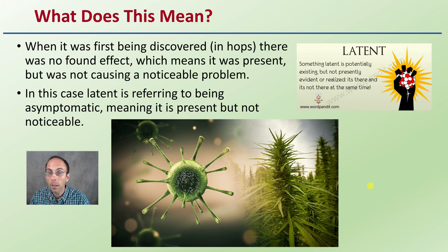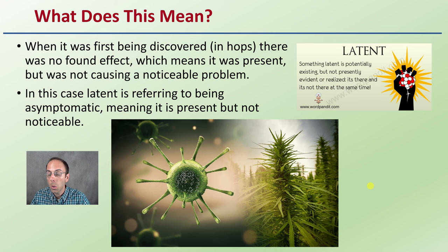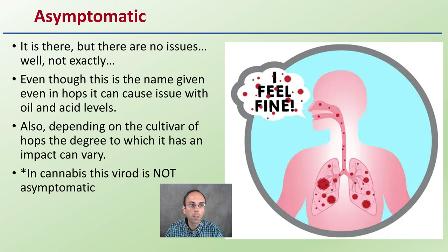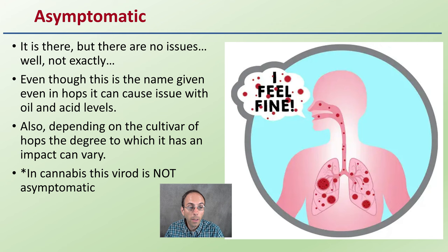When it was first being discovered, at least in hops, there were no really found effects — meaning it's present but not causing a noticeable problem. 'Latent' was referring to being asymptomatic: the viroid is physically there but not visually noticeable. Even so, even in hops it can cause an issue with oil and acid levels affecting the final crop, even if it doesn't produce a visible change to the leaves. Depending on the cultivar, the degree of impact can also vary. In cannabis, however, this viroid is not asymptomatic — it does show visual symptoms.